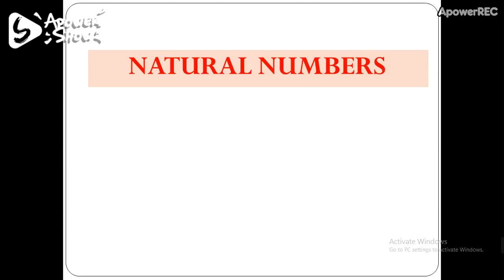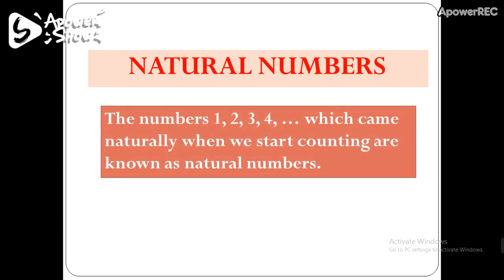So the first question which arises is: what are natural numbers? The numbers 1, 2, 3, 4 and so on, which came naturally when we start counting, they are known as natural numbers.